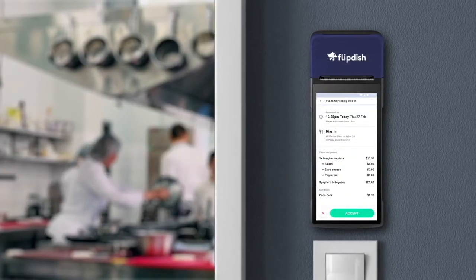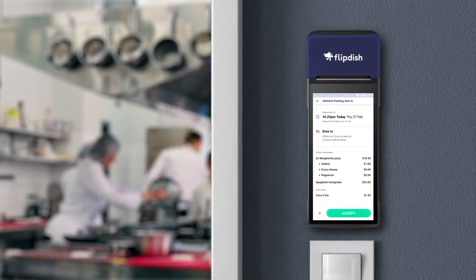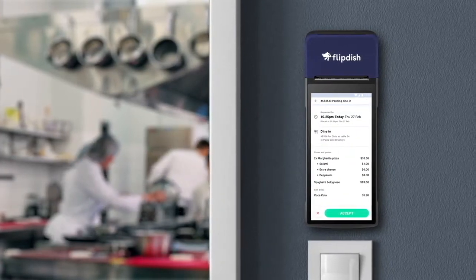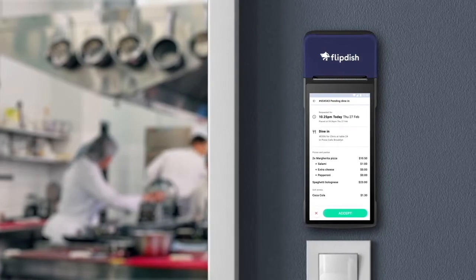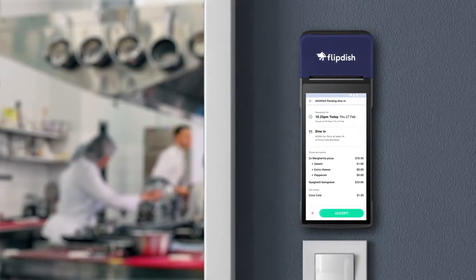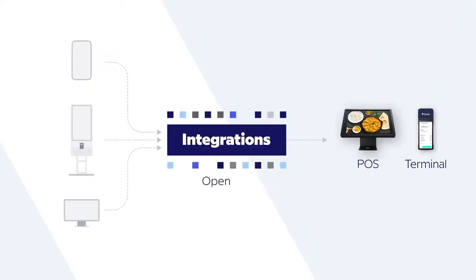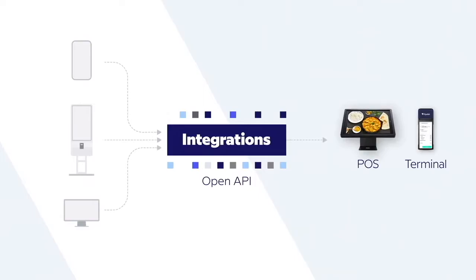Accepting, rejecting, cancelling and refunding an order can be done using the FlipDish Terminal or the FlipDish Terminal app on an Android device. However, if you have an integration with your POS or TIL system, you will be able to accept and reject as usual and you can skip this lesson.